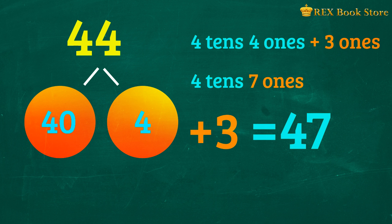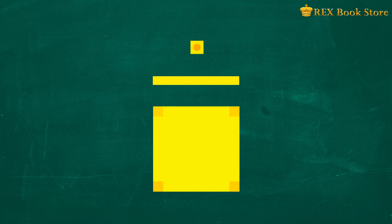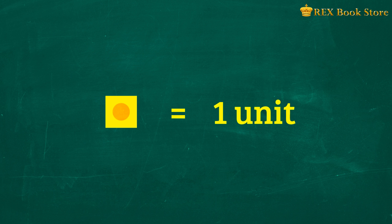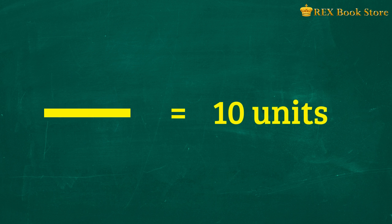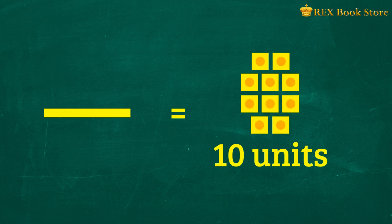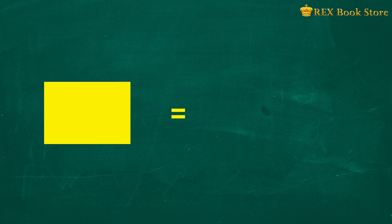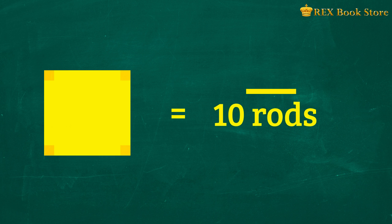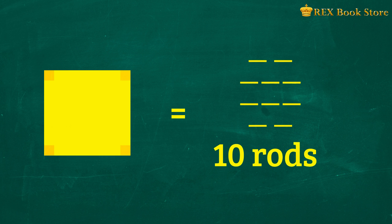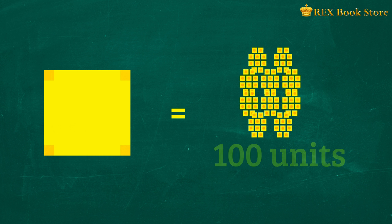Let's explore another way of adding by using base 10 models. This is a unit. It is equal to 1. This is a rod. One rod is equal to 10 units. A flat is equal to 10 rods and also to 100 units.